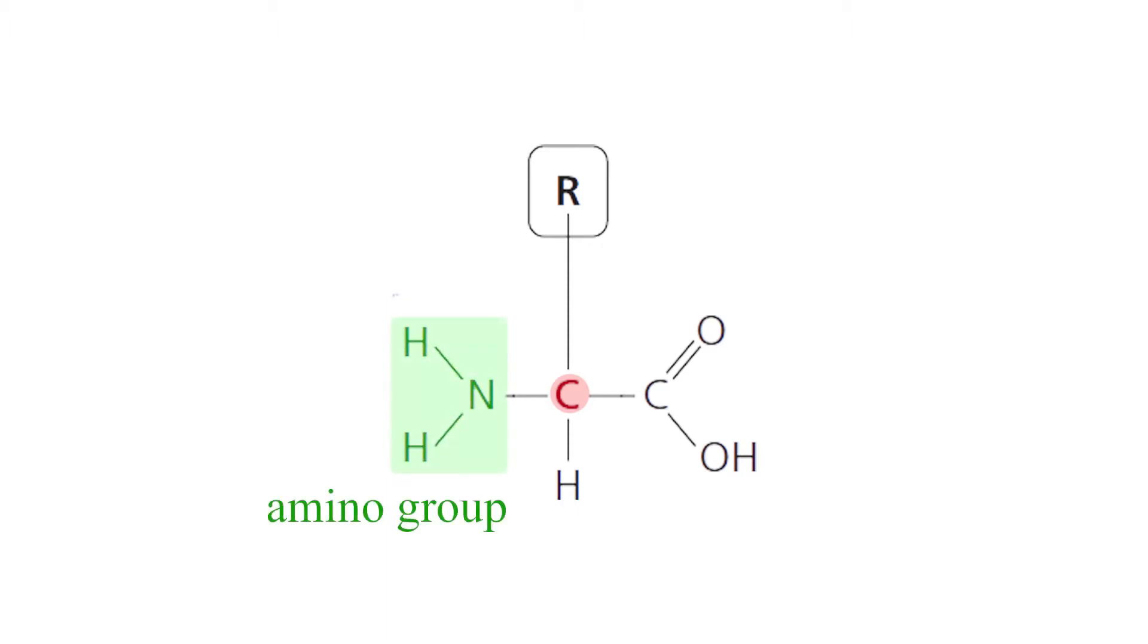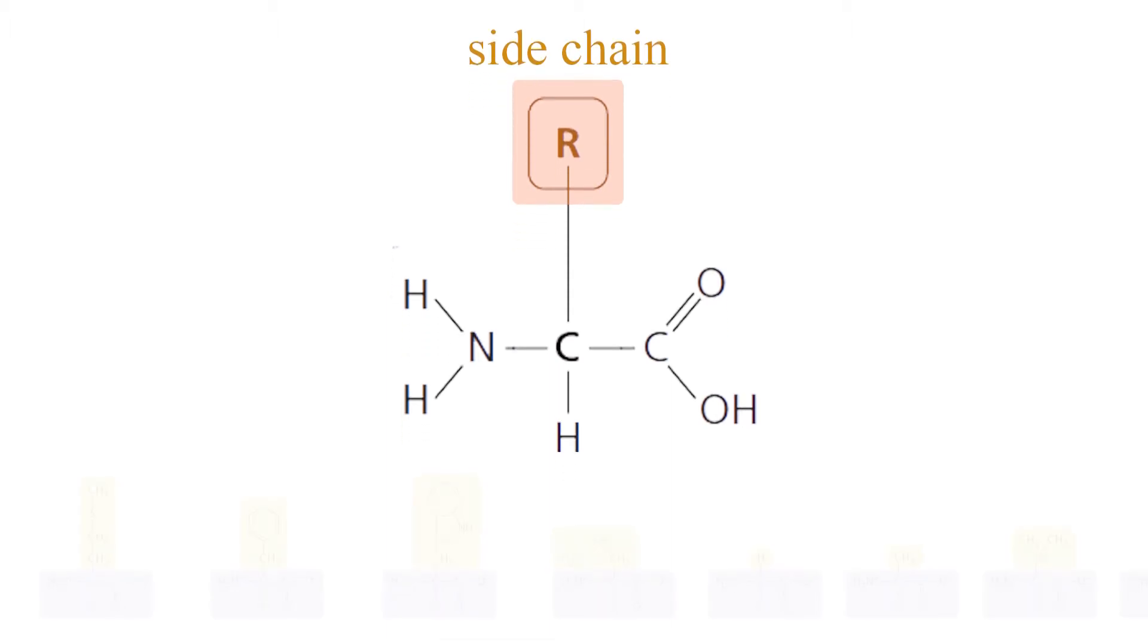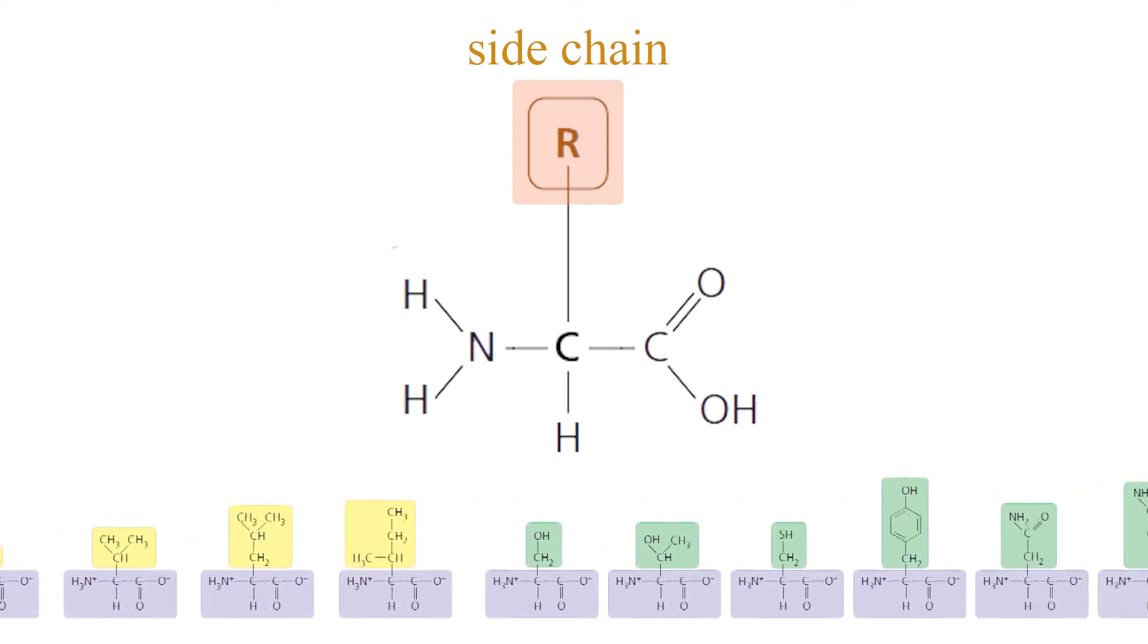An amino group, a carboxyl group, a hydrogen atom, and lastly, a side chain. This side chain, or R group, varies among amino acids and is what differentiates the 20 amino acids from each other.